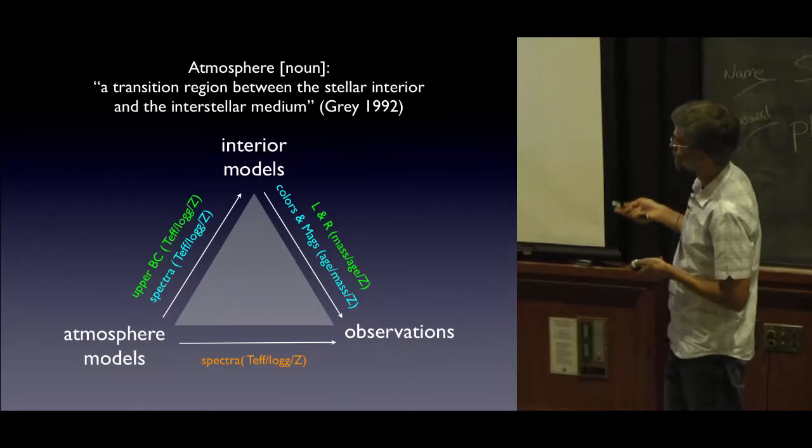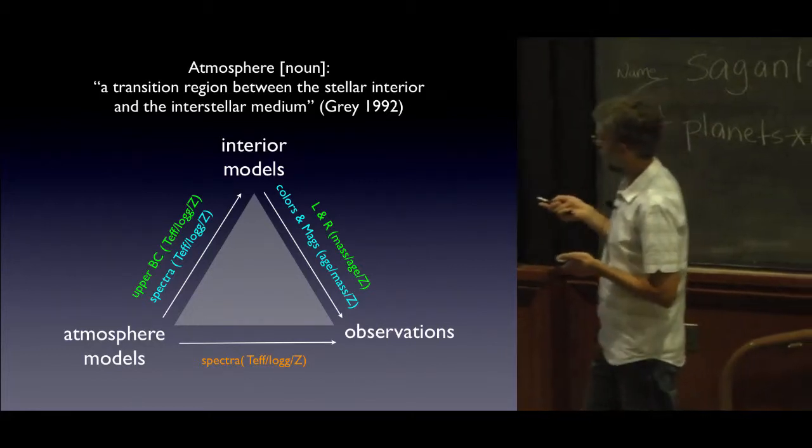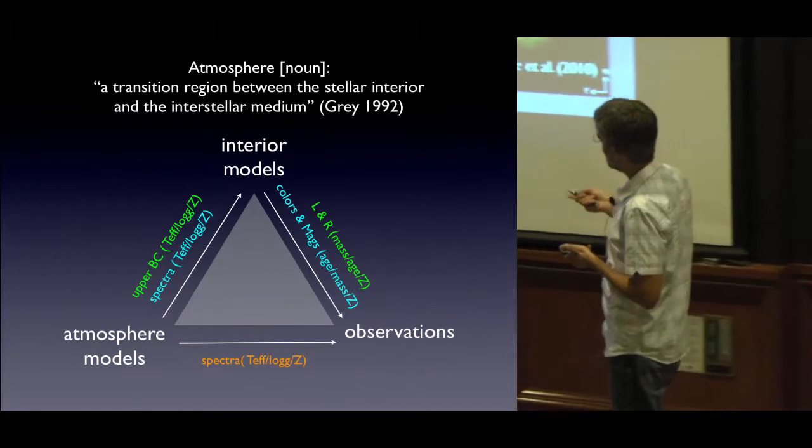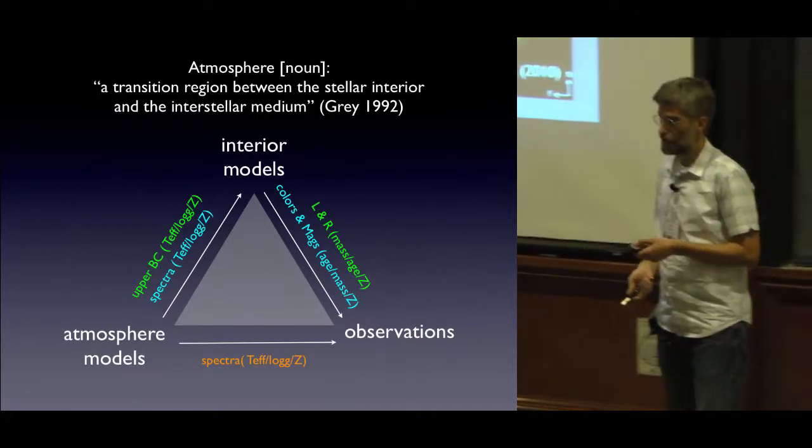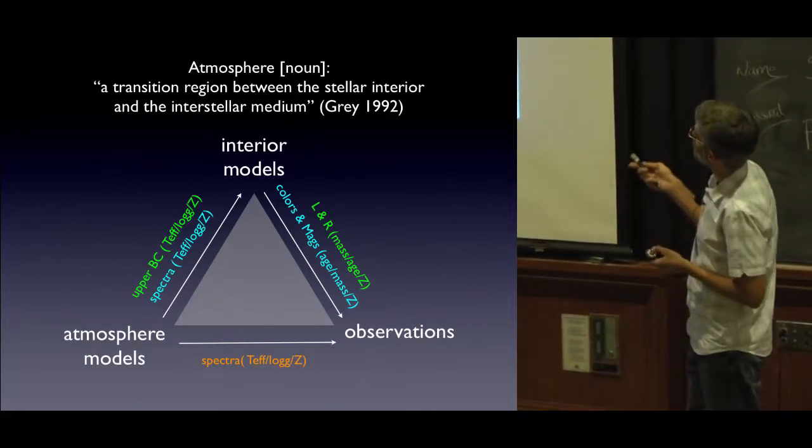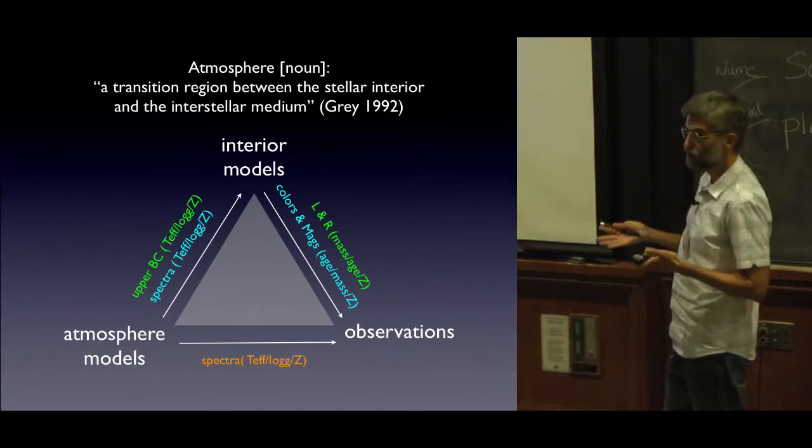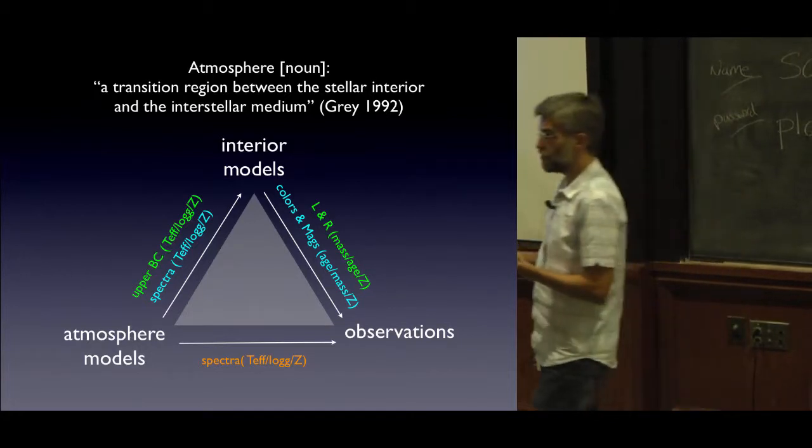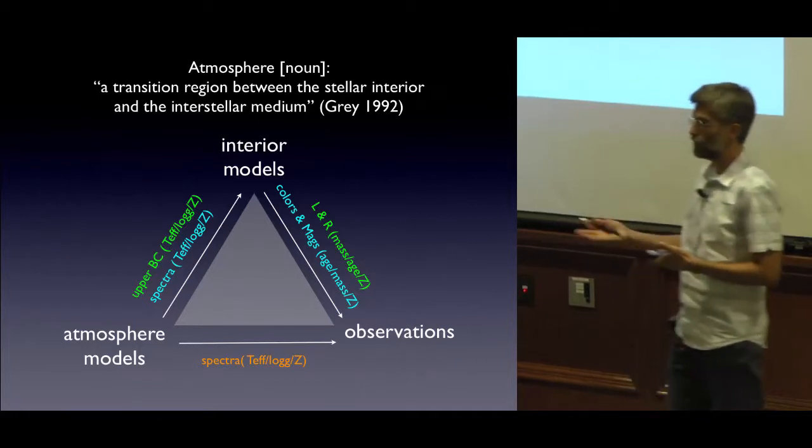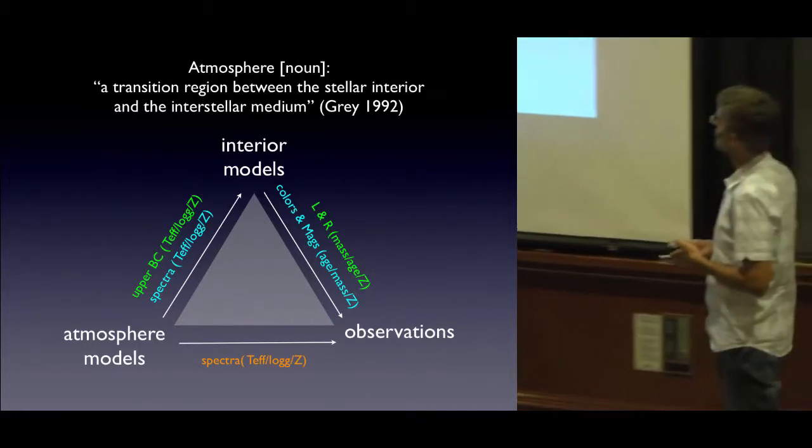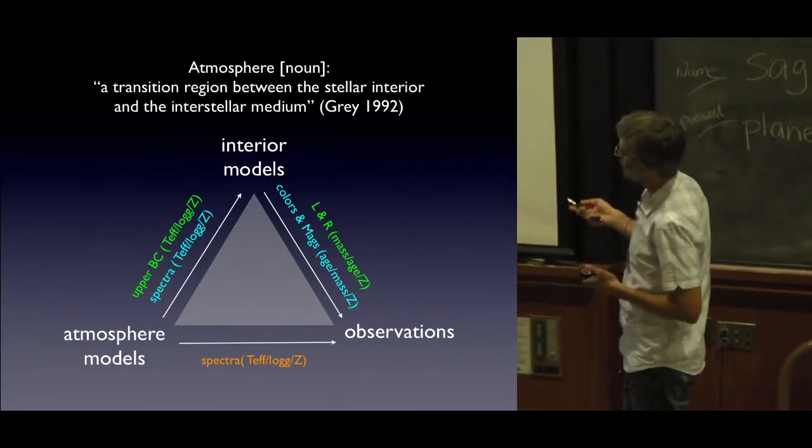It's this transition region between the stellar interior and the interstellar medium. Of course, we're interested in planets, so you can just scratch stellar and put planetary interior and the interplanetary medium. But that's really what it is—it's just a transition region, and that's what we see when these pictures before. We're seeing, well, these are heavily processed by people who want to make fancy pictures for the internet, but when we look at these guys, we're looking at their atmospheres.